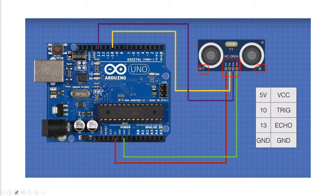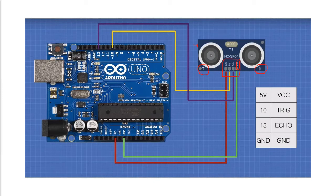The ultrasound distance sensor sends sound, transmits it, and then waits for the echo. Once the echo comes back, it calculates the delay — how long it takes for the echo sound to return. Using the terminal labeled R, it receives that echo. Once we know how long the sound takes to come back, we can get the distance. That is why we call it the ultrasound distance sensor.